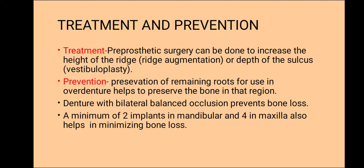Coming to treatment and prevention: to prevent residual ridge resorption, preservation of remaining roots for use in overdentures helps to preserve the bone in that area. Dentures with bilateral balanced occlusion prevent bone loss. Two implants in the mandible and four in the maxilla also help in minimizing bone loss. For treatment, pre-prosthetic surgery can be done to increase the height of the ridge — called ridge augmentation — and to increase the depth of the sulcus — called vestibuloplasty. Thank you.